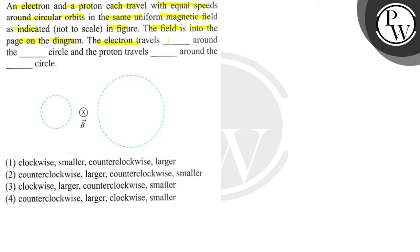The electron travels around the circle and the proton travels around the circle. Now to discuss the solution of this question let's write down the key concepts here. Key concept number one is Fleming left hand rule.